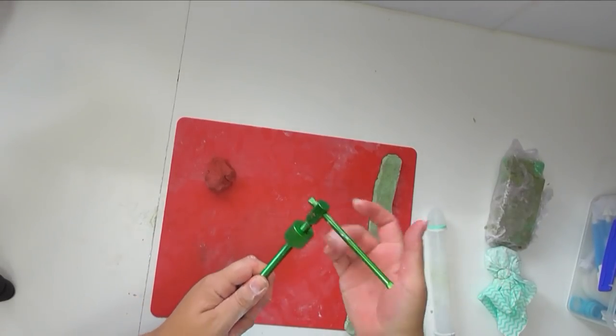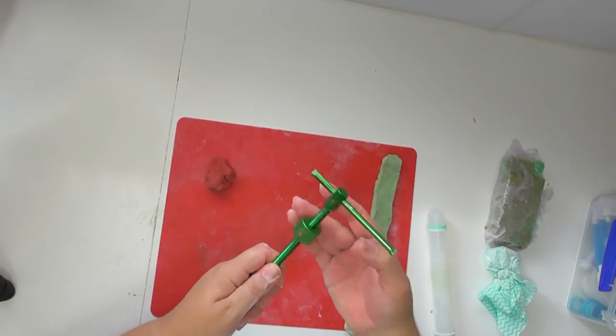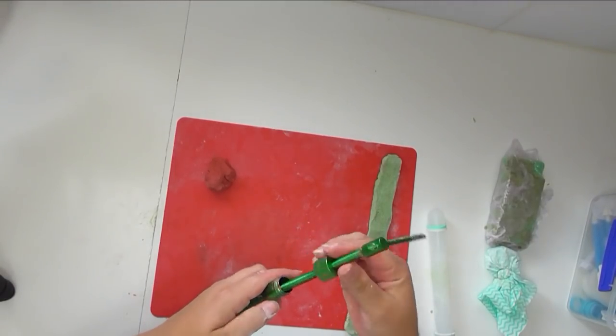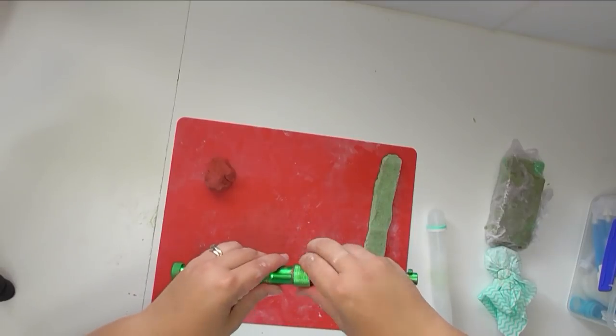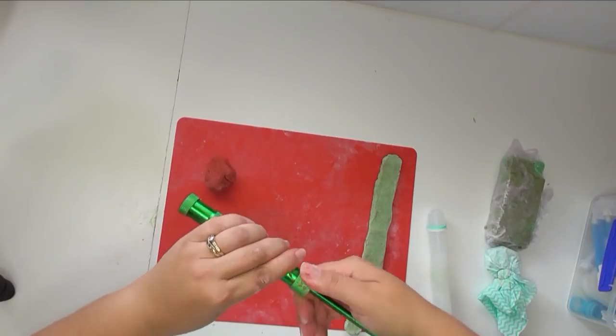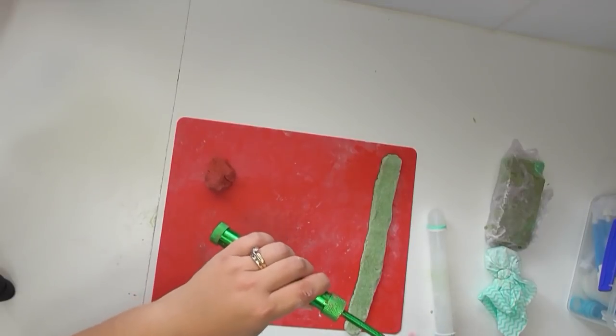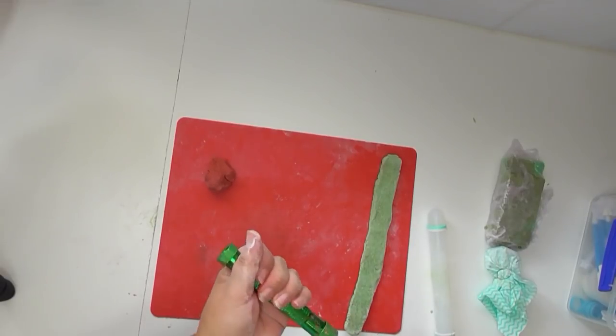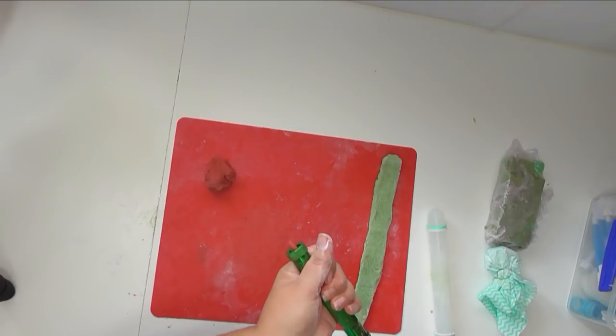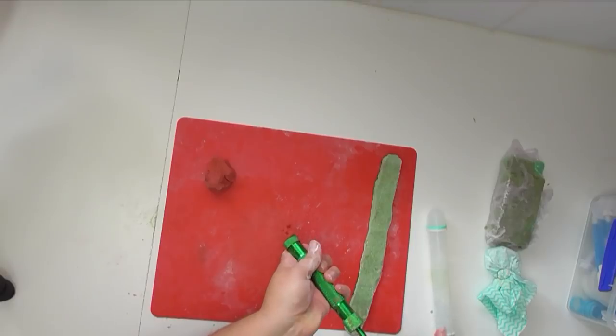And then we bring this back down and we tighten that onto the top of our extruder. Okay, so we've got that tightened on there now, and all it is is just a matter of winding this down. And as that starts to touch the soap dough, it will start to push it out the other end in whichever shape that you've got attached onto the end of your tool.